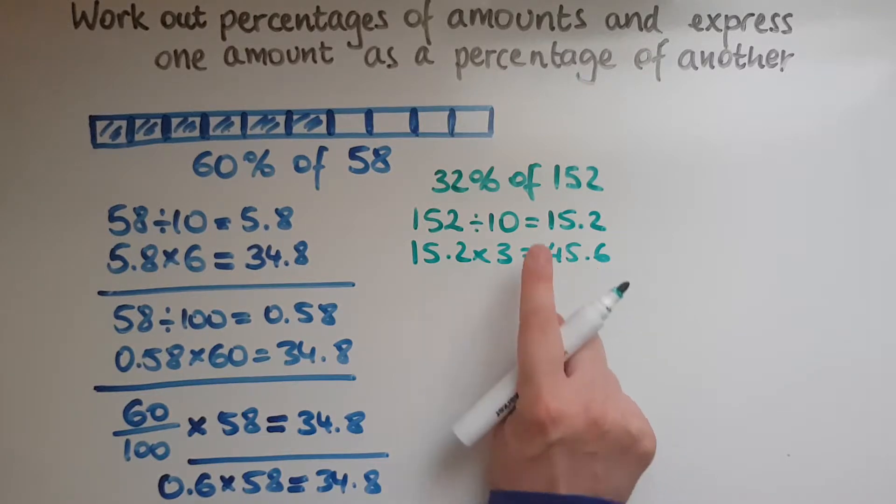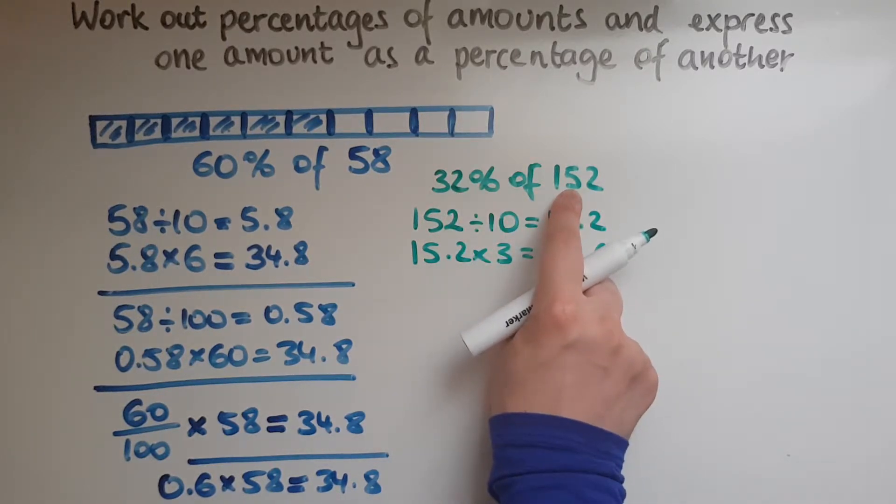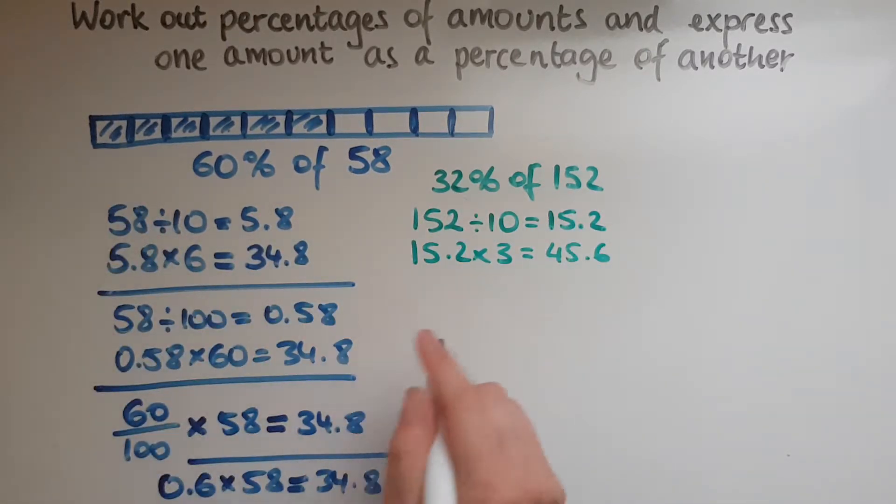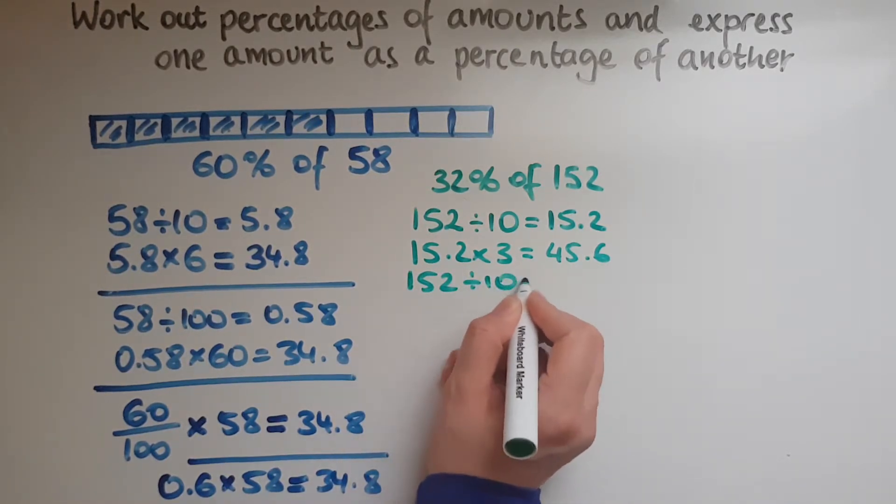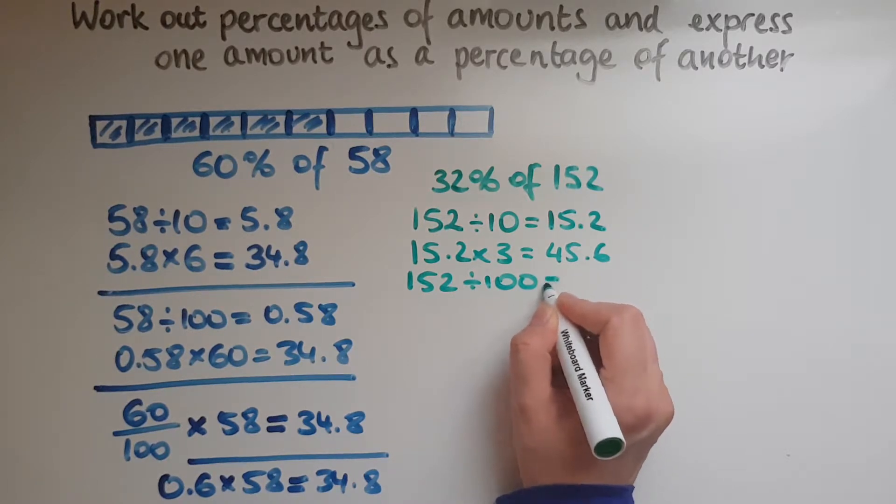So 1% will be found by dividing this by 100. So that's a very tiny amount there. So 152 divided by 100 gives 1.52.